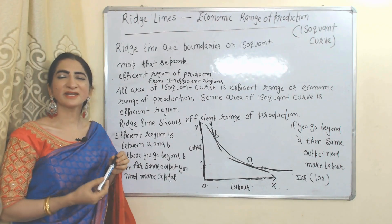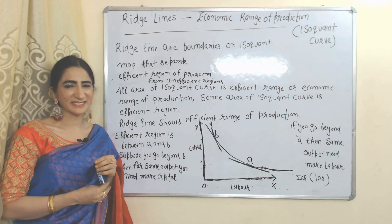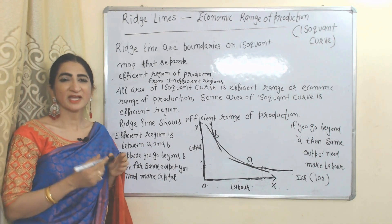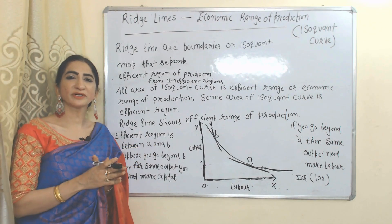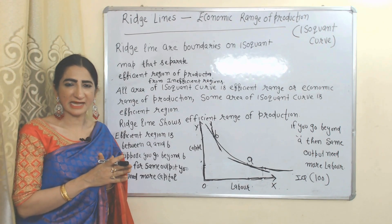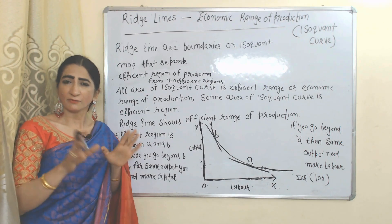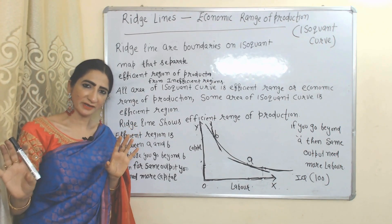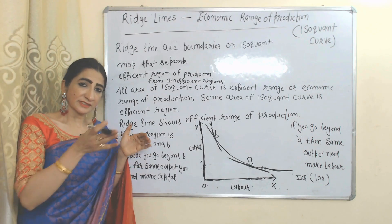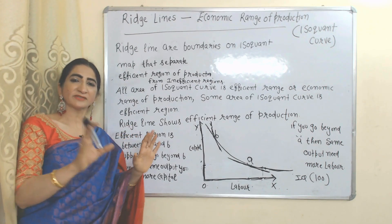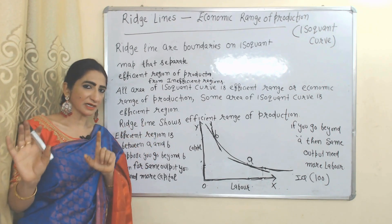Hello everyone, my name is Mani. I hope you all are staying healthy. Today we are going to talk about ridgelines. We all know about the isoquant curve — some area of the isoquant curve is an efficient region, but some area is not an efficient region.